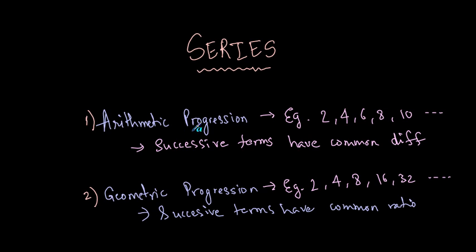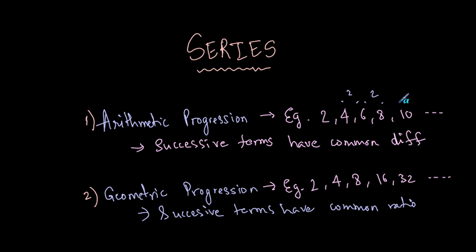In an arithmetic progression, take any two successive terms — let's take 4 and 6, they have a difference between them. The difference is 2. If we take 6 and 8, the difference is again 2, or if we take 8 and 10, again the difference is 2. So elements in an arithmetic progression have a common difference.